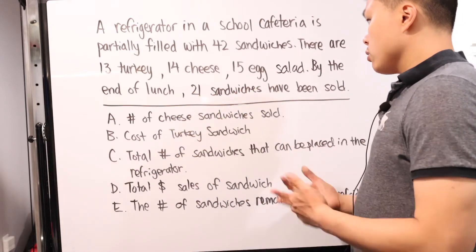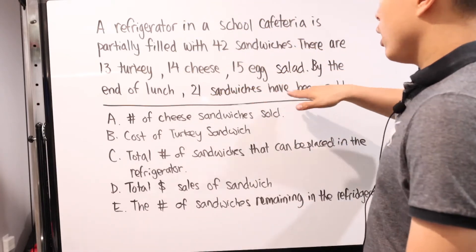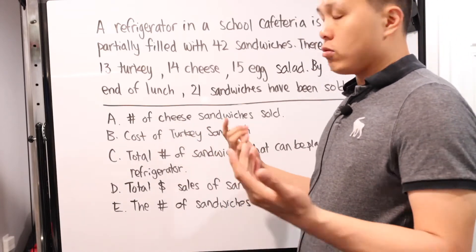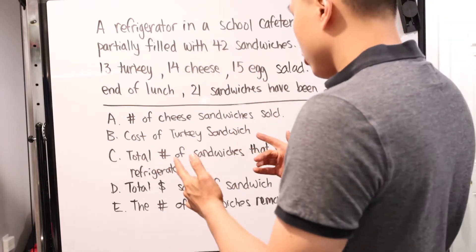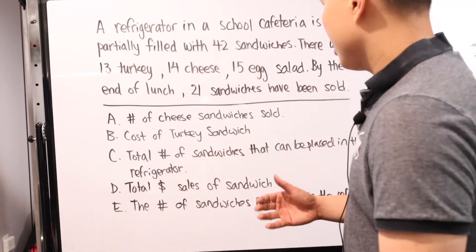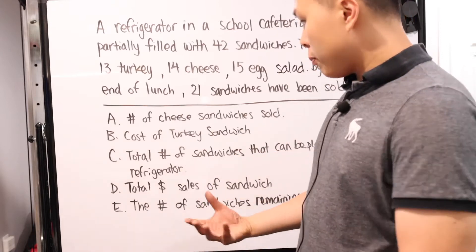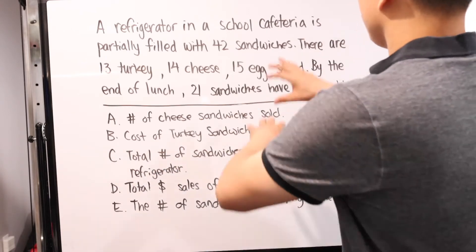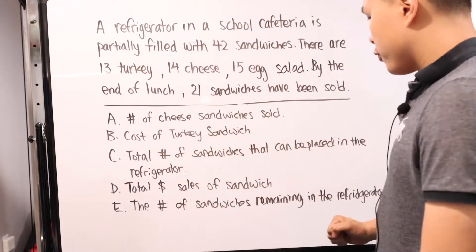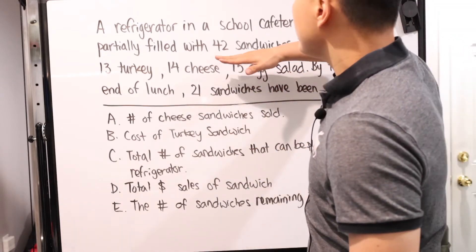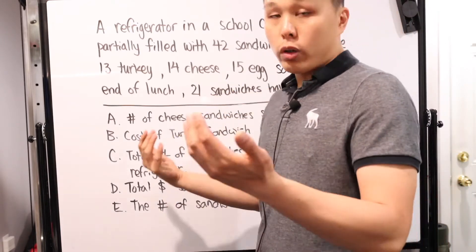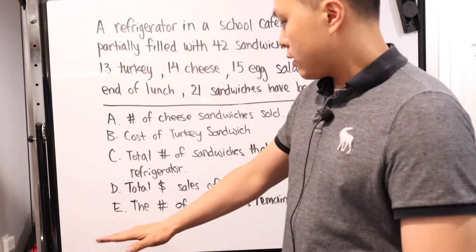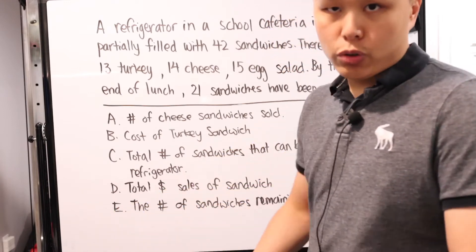The first statement — number of cheese sandwiches sold — we can't figure that out. We just know a total of 21 sandwiches were sold. Second, cost of a turkey sandwich — we don't know the cost of anything; it doesn't say. Third, total number of sandwiches the refrigerator can hold — no way; we know it was partially filled but not the total capacity. Fourth, total dollar sales — money was never mentioned at all. Last one: number of sandwiches remaining in the refrigerator — that we can actually figure out. We originally had 42 sandwiches and 21 were sold, so 42 minus 21 gives us the answer. That's the only statement we can remotely answer.